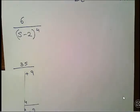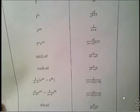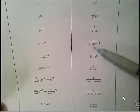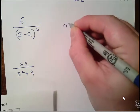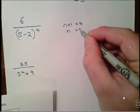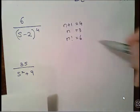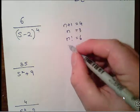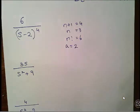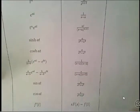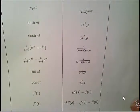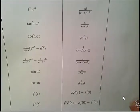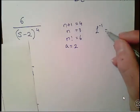Now 6 over (s minus 2) to the power of 4. The relevant formula is n factorial over (s minus a) to the power of n+1. Here n+1 = 4, so n = 3, and n factorial = 3! = 6 — that works out nicely. Also a = 2. The inverse Laplace transform formula gives t to the power of n times e to the at, so the answer is t cubed times e to the 2t.